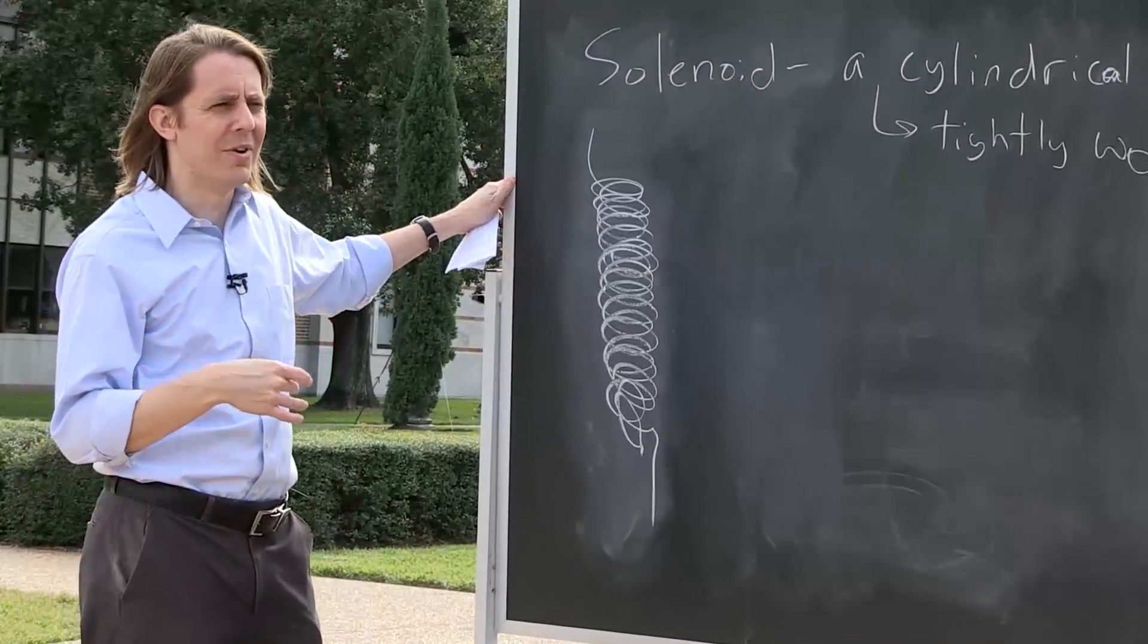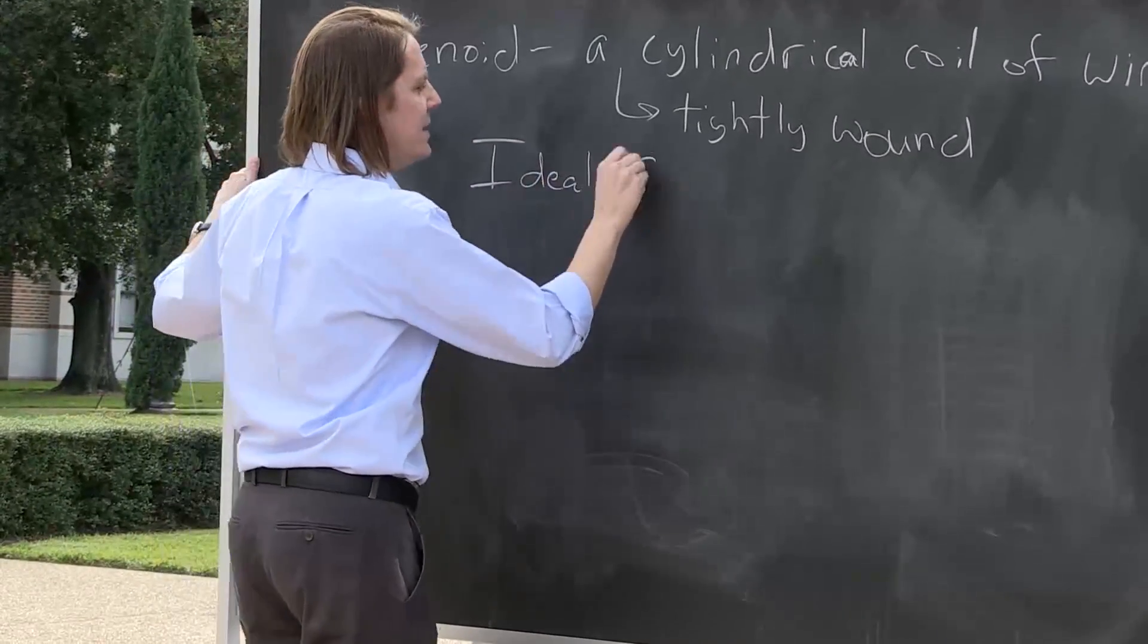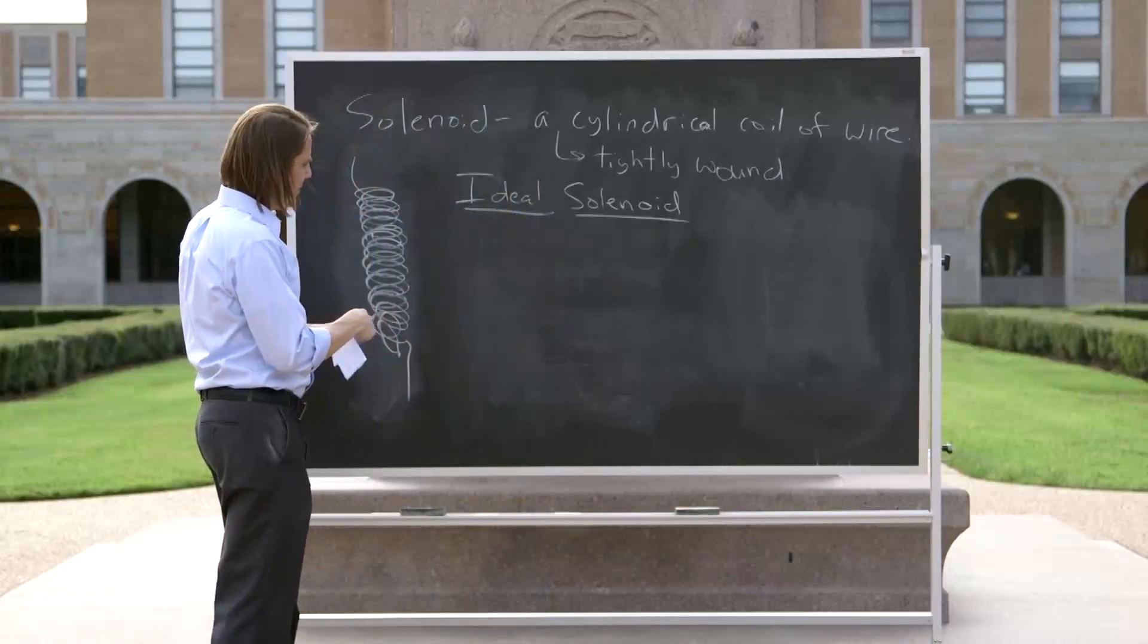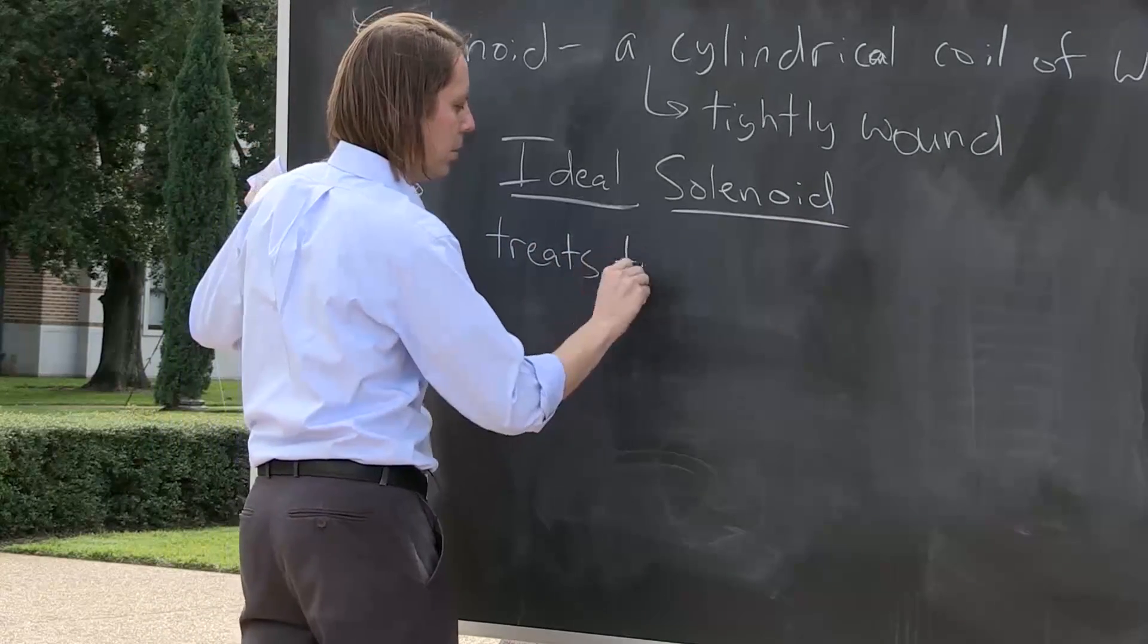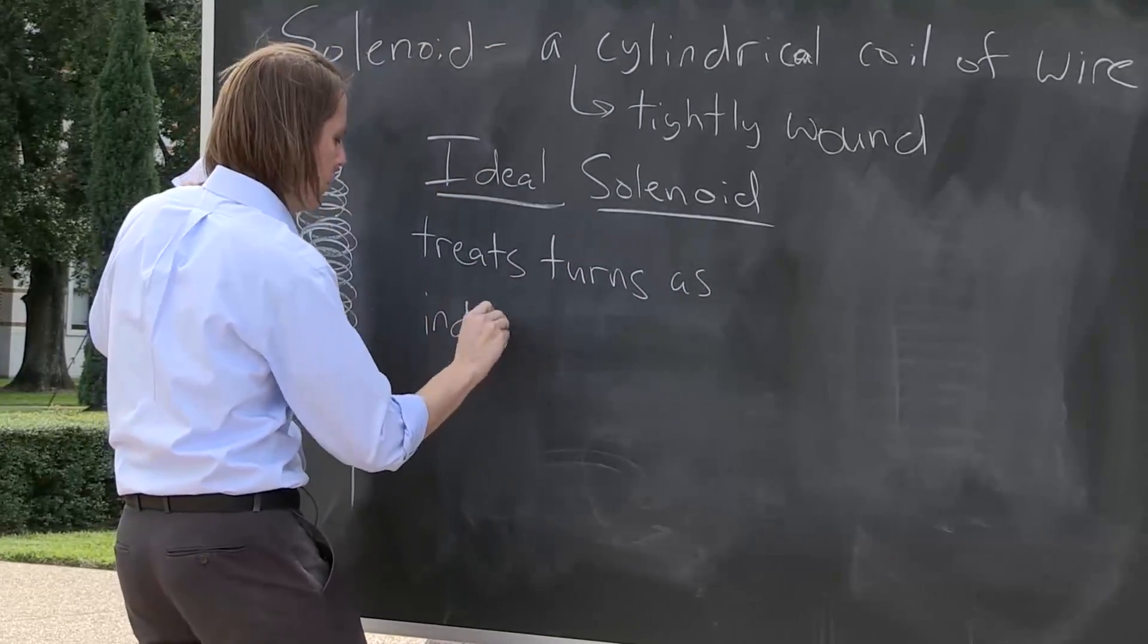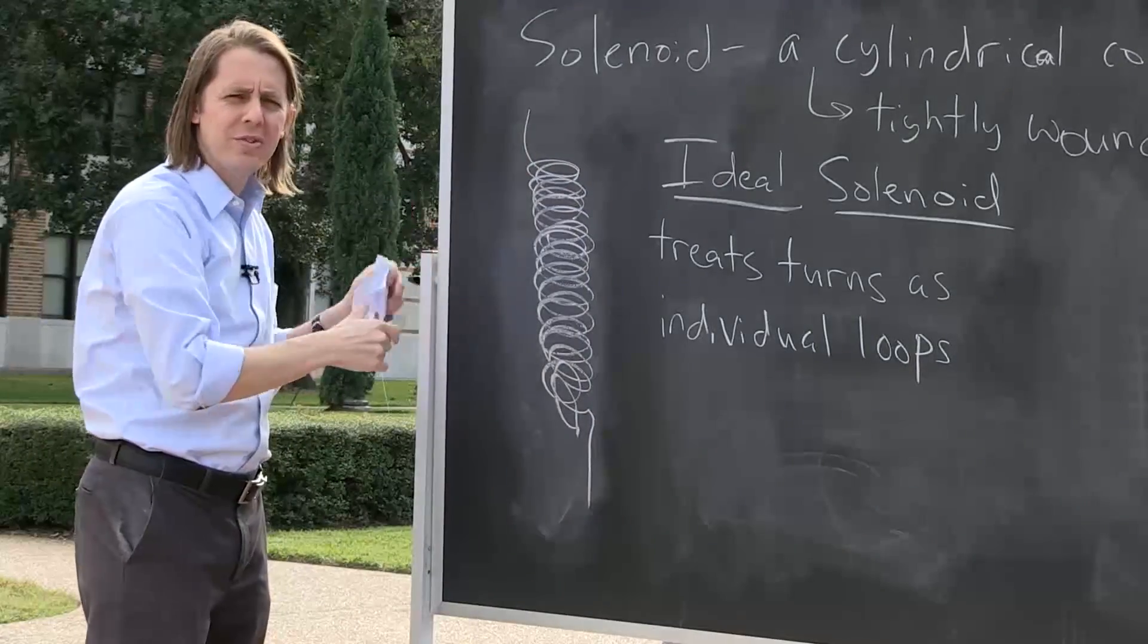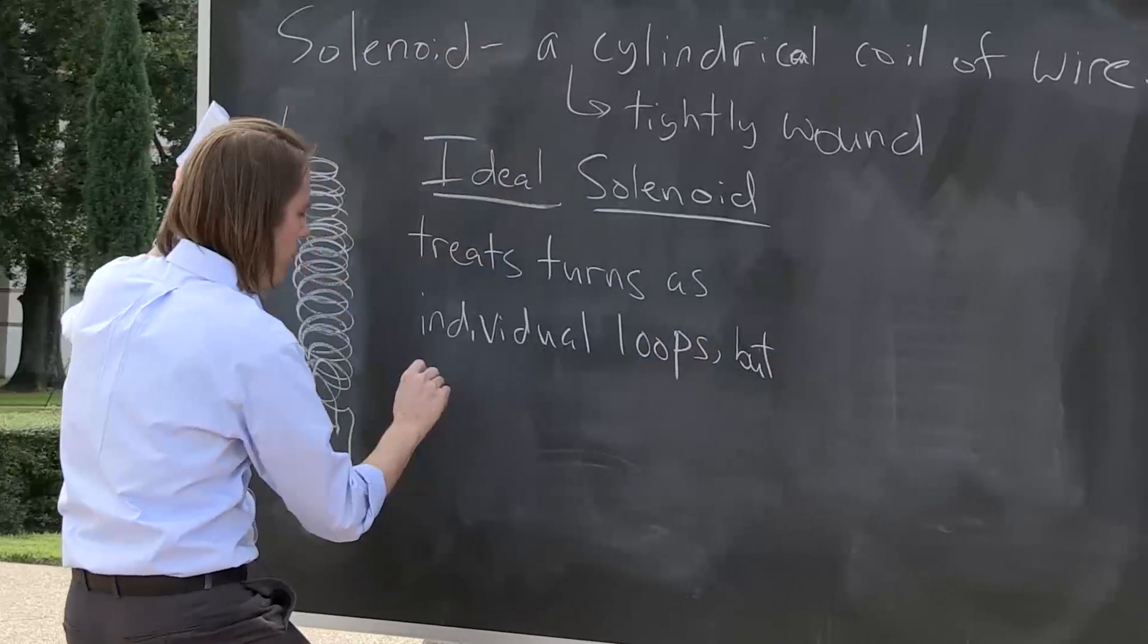So in physics, we can't deal with that. In physics, we always deal with models of ideal things. So let's think for a second about how we draw an ideal solenoid. So our model of the solenoid basically treats the turns as individual loops.